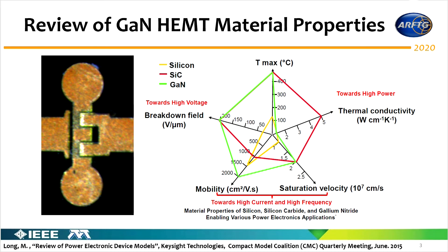The GaN-HEMT is always a hot topic because it has some really great and interesting material properties. High breakdown field leads to high voltages and high power. When coupled with a silicon carbide substrate, we get very good thermal conductivity as well, and of course it has high mobility and high saturation velocity, which leads to higher currents.